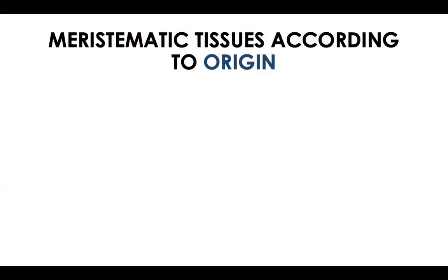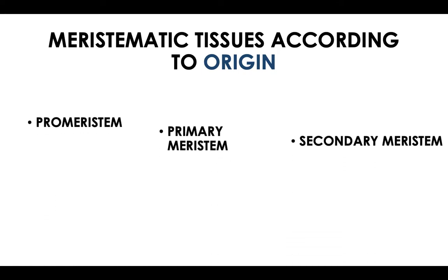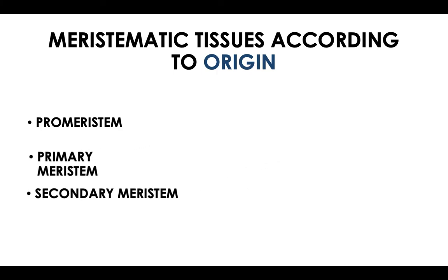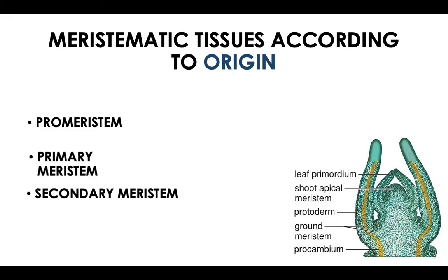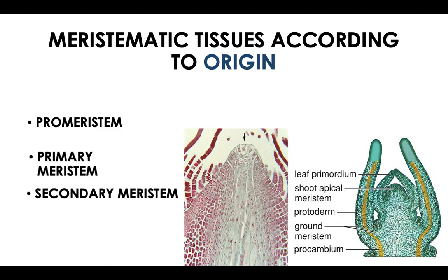There are three categories of meristematic tissues based on origin: promeristem, primary meristem, and secondary meristem. A promeristem is a group of young meristematic cells of a growing organ — the early embryonic meristem from which other advanced meristems are derived. A primary meristem consists of cells that arose from the promeristem and make up the apical tip at the shoot and root. A secondary meristem is responsible for secondary growth in plants, i.e., growth in girth or thickness.